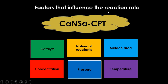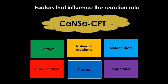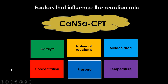The factors that affect reaction rate can be remembered with the mnemonic 'Cancer to Cape Town': CA stands for catalyst, N for nature of reactants, SA for surface area, C for concentration, P for pressure, and T for temperature. The catalyst speeds up the rate of reaction by providing an alternative route with a lower activation energy.